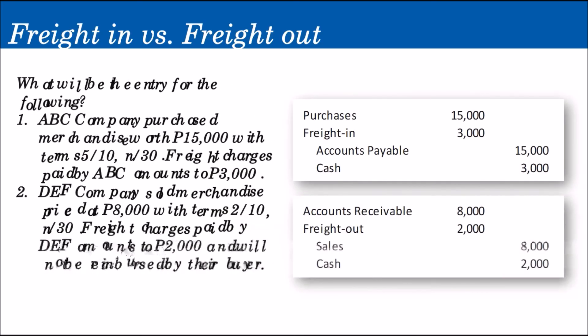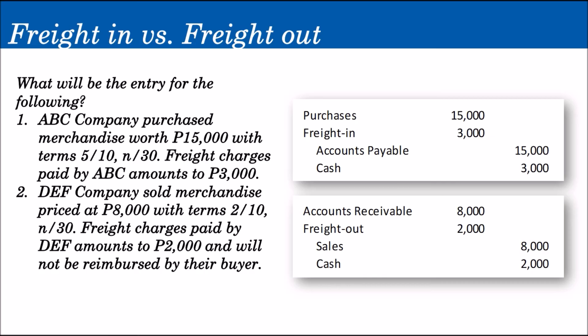Let's try these examples. What will be the entry for the following? Number one: ABC Company purchased merchandise worth $15,000 with terms 5/10, n/30, and freight charges paid by the buyer is $3,000. The entry is: debit Purchases $15,000, debit Freight In $3,000, credit Accounts Payable $15,000, and because they paid the freight charges directly, credit Cash $3,000.